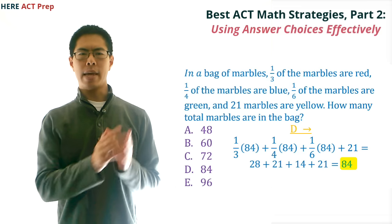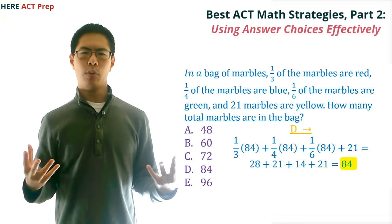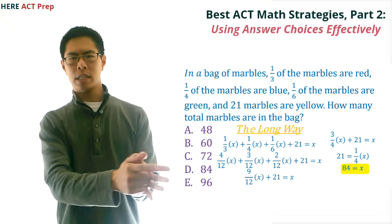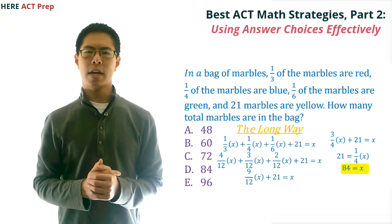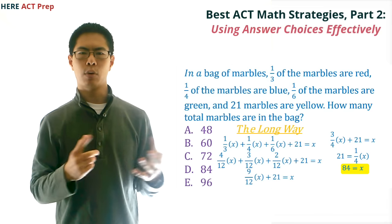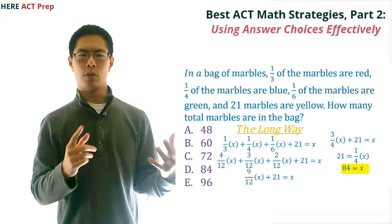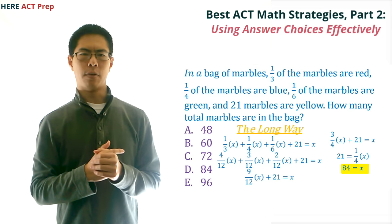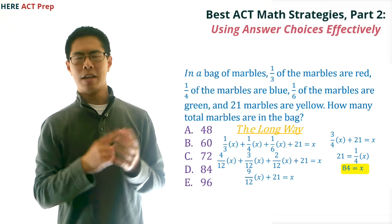As you can see, if we had started from A and moved forward, we would have needed to try three answer choices instead of just two. If we had wanted to set up and solve an equation for this question, we would have done 1/3x + 1/4x + 1/6x + 21 = x. Then we would have changed the fractions to common denominators to get 4/12x + 3/12x + 2/12x + 21 = x. Then we would have combined the like terms to get 9/12x + 21 = x, which simplifies to 3/4x + 21 = x. Then we subtract 3/4x from both sides to get 21 = 1/4x.